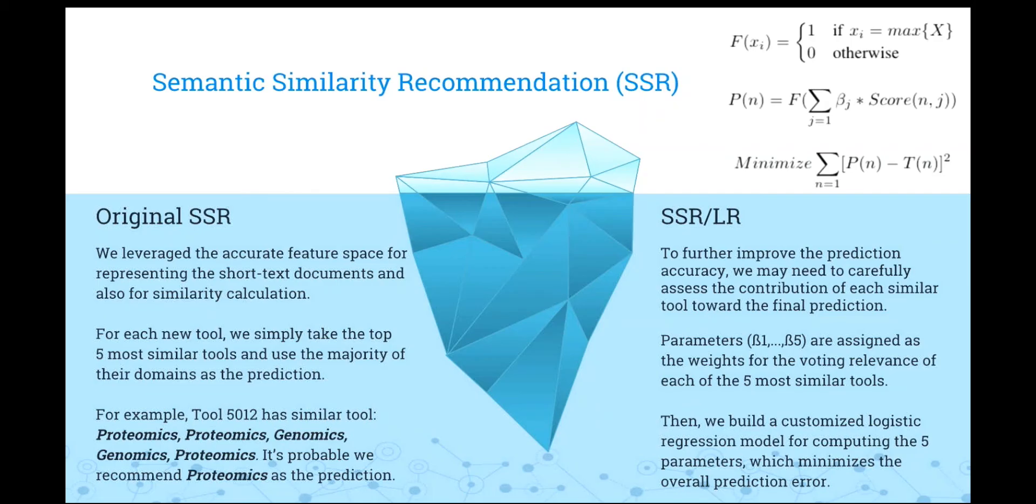But in fact, we don't know exactly what weights we should put on each position in our five similar tools. So we have a customized logistic regression to predict the weights we put on each tool. And to further improve the prediction accuracy, we use parameters beta 1 to beta 5 to assign the weights for the voting relevance. For each of the five most similar tools, then we build a logistic regression to compute the five parameters, which minimize the overall prediction error.